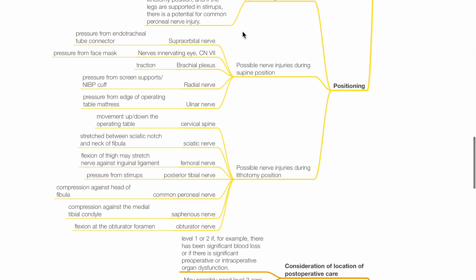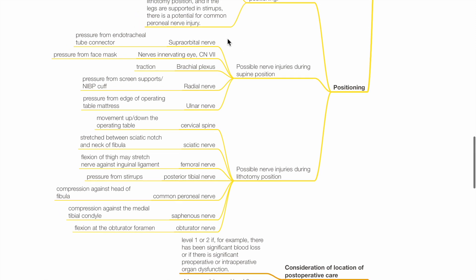Possible nerve injuries during supine position include supraorbital nerve due to pressure from endotracheal tube connector, nerves innervating the eye and cranial nerve 7 due to pressure from face mask, brachial plexus due to traction, radial nerve due to pressure from screen supports or NIBP cuff, ulnar nerve due to pressure from edge of operating table mattress.